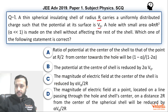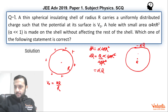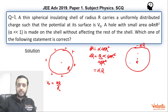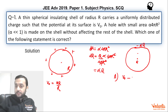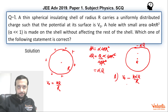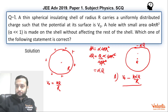Now let us check the options. Option A asks for the ratio of the potential at the center of the shell to that at a point R/2 from the center towards the hole. The potential at the center is V₀ (due to the whole shell) minus k × αQ / R (due to the −αQ point charge). The potential at the point R/2 from center is V₀ minus k × αQ / (R/2), which equals V₀ minus 2kαQ/R.